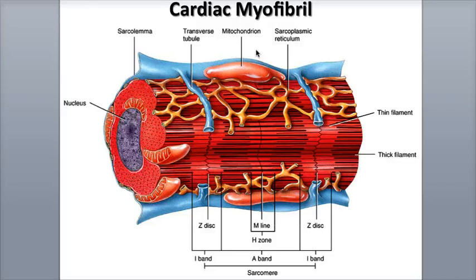The remainder of the ATP comes mostly from the oxidation of amino acids, lactic acid generated by contracting muscle fibers, ketone bodies, and creatine phosphate. The heart can utilize more lactic acid to supply its energy needs during exercise.